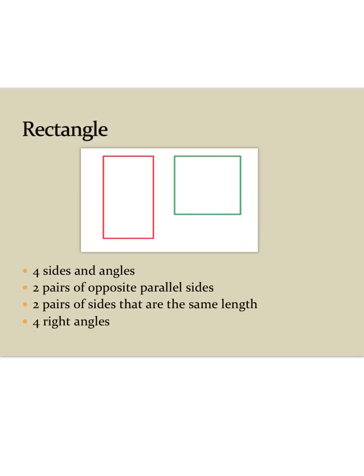Now, a rectangle has four sides and four angles. It also has two pairs of opposite parallel sides, and two pairs of sides that are the same length. As always, with a rectangle, it has four right angles. So here are my four right angles. One, three, and four. And here are my opposite parallel sides. Top and bottom, and my left, and my right.